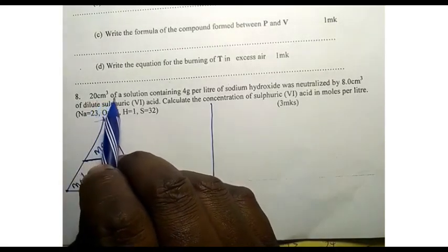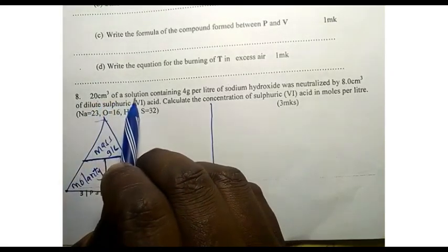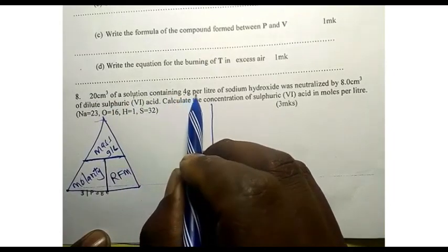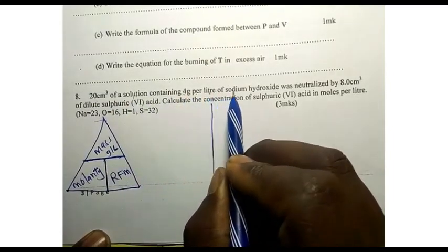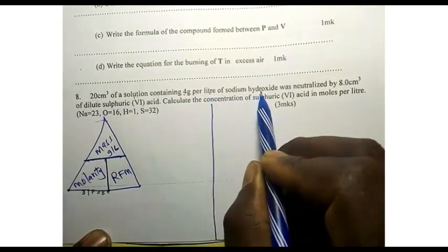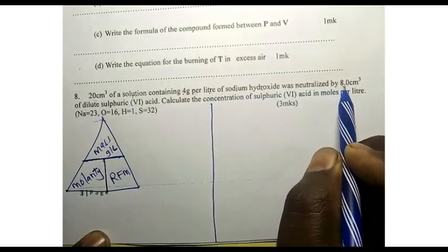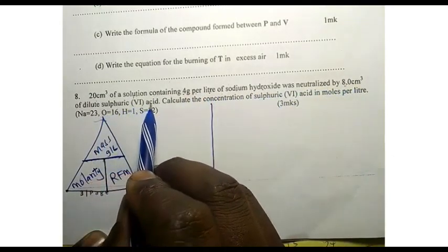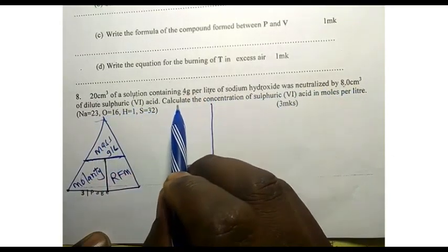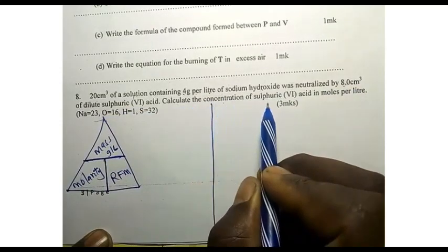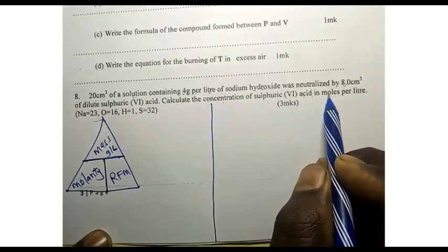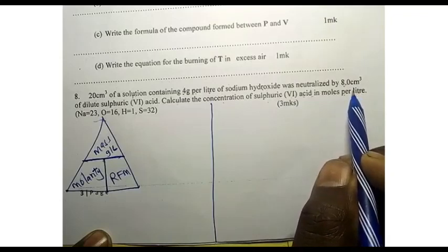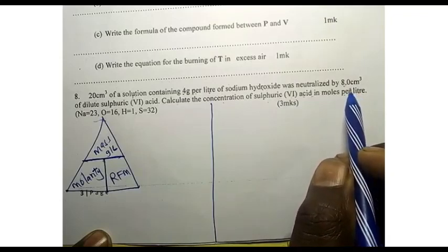20 centimeters cubed of a solution containing four grams per liter of sodium hydroxide was neutralized by 8 centimeters cubed of dilute sulfuric acid. Calculate the concentration of sulfuric acid in moles per liter.